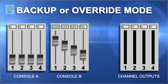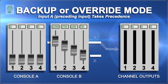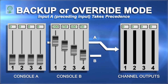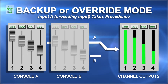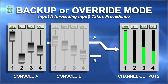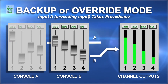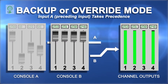The backup, or override mode, will send input A continuously, ignoring input B, as long as input A is a valid DMX signal. If input A's signal is lost or fails, the merger will automatically switch to input B after one second.